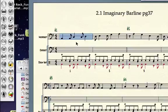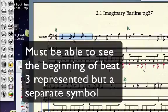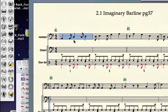Remember, the imaginary barline is a place right between the AND of 2 and the downbeat of 3. It's a place in the measure where we want to be able to see the beginning of beat 3. Even if beat 3 is tied into, we want to see a separate symbol that represents the beginning of beat 3.